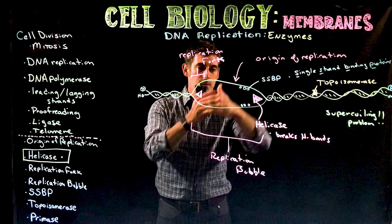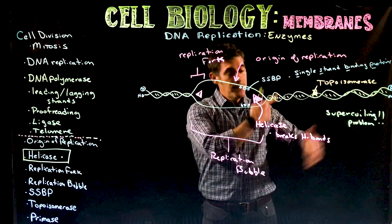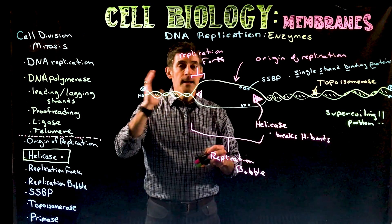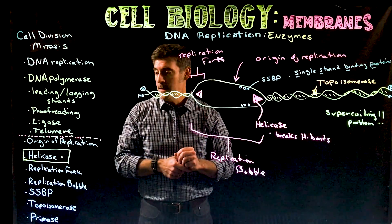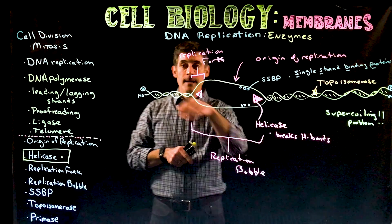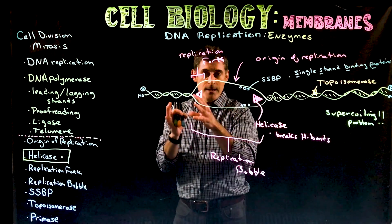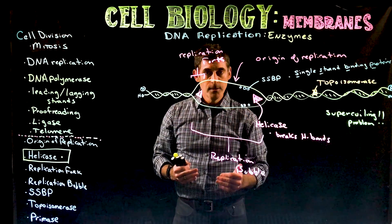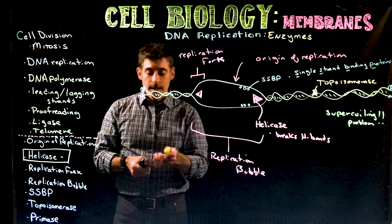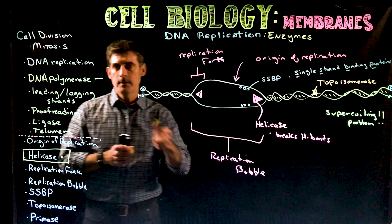Now we need to start reading the DNA and making new pieces. The enzyme DNA polymerase will come in, read a template, read an A and bring in a T nucleotide, read a G and bring in a C, and build the new DNA. However, DNA polymerase has a couple of rules — one of them is that it can't work from scratch.